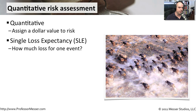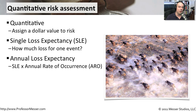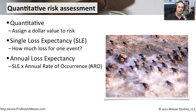One way to do this is to determine what the single loss expectancy might be if a particular resource was made unavailable. If that web server goes down, if we lose our database server, if our mail server is not available — how much money can we expect to lose? Then we need to think about how often we should expect that particular resource not to be available for an entire year. We find the annual loss expectancy, which is the single loss multiplied by an annual rate of occurrence. We multiply the number of occurrences by the amount of money we expect to lose, and that's our dollar figure for the year — our annual budget we can expect to lose. Based on that, we may decide to purchase more security devices, change how we provide those services, create redundancy, or think about other ways to mitigate that issue.